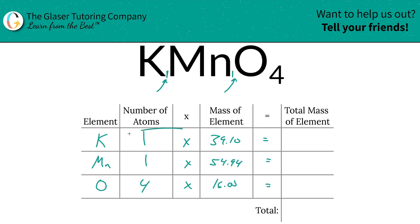Then all we're simply going to do is multiply this row together so that we find the total mass of the element in the compound. So the total mass of potassium is going to be 39.10, total mass of manganese is going to be 54.94.